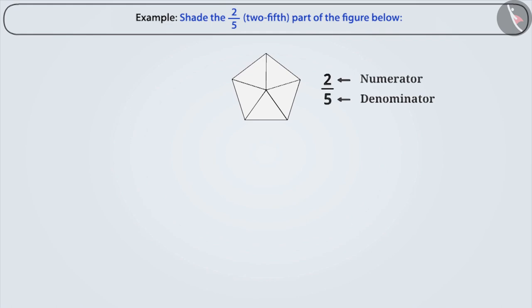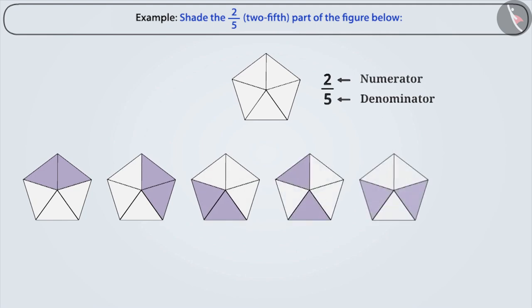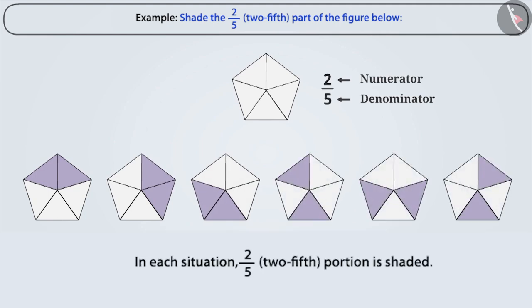This could be done in several ways. In each possibility, 2 fifth portion is shaded.